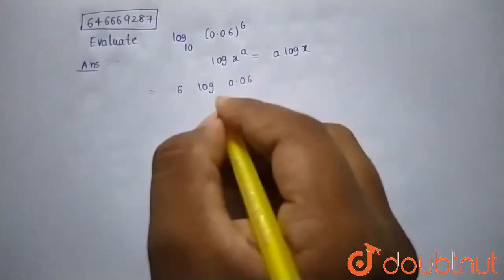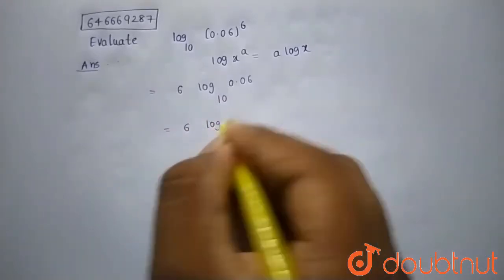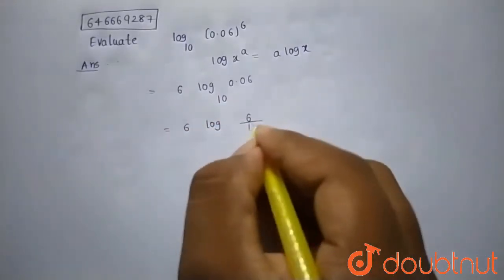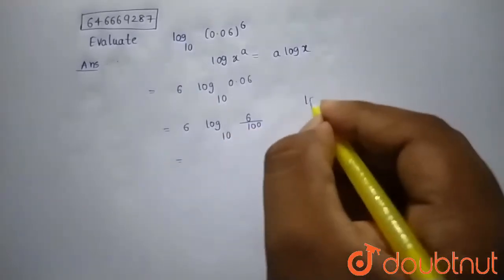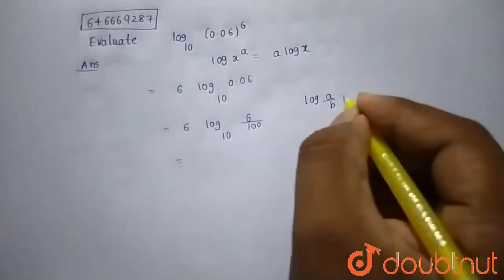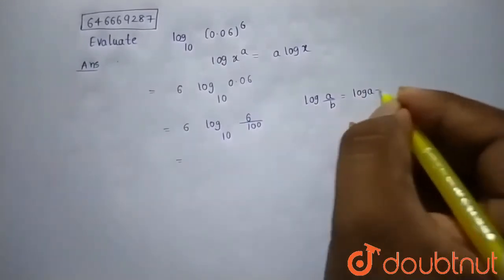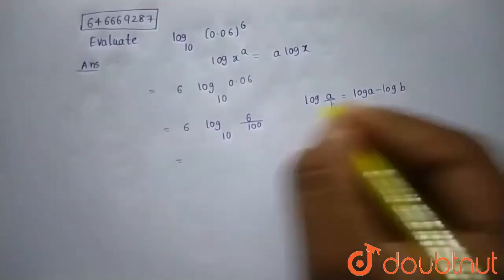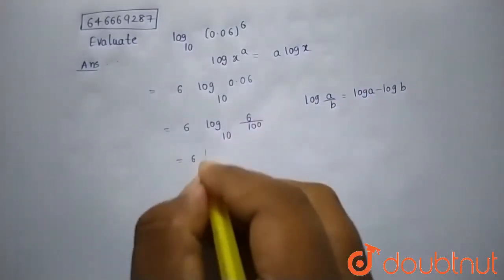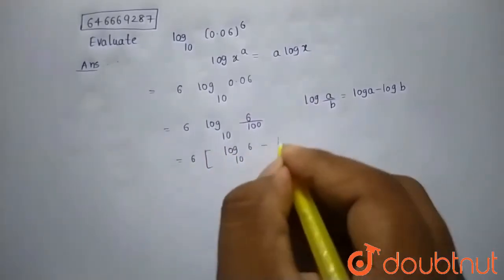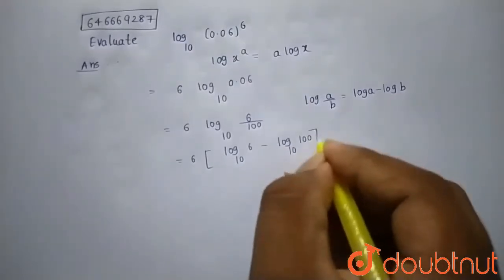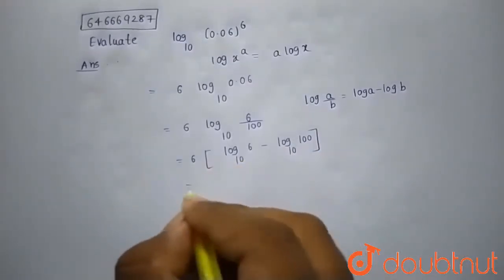And we know that 0.06 is nothing but 6 by 100 to the base 10. Now we know that log a by b is equals to log a minus log b. So by using this I can write this as 6 into log 10 to 6 minus log 10 100. Now